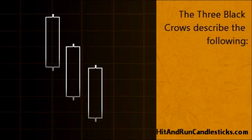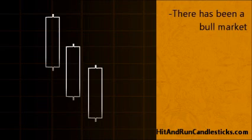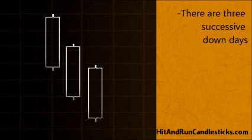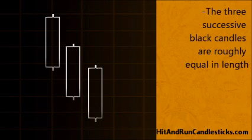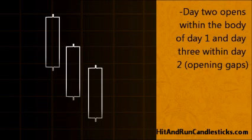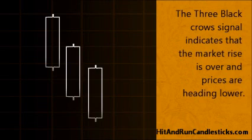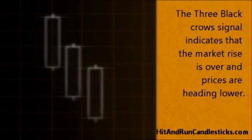The Three Black Crows describe the following: there has been a bull market; there are three successive down days; the three successive black candles are roughly equal in length; day two opens within the body of day one and day three within day two; and each of these candles has a very short lower shadow as it closes near its low for the day. The Three Black Crows signal indicates that the market rise is over and prices are heading lower.